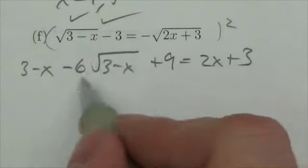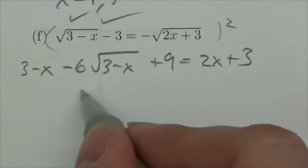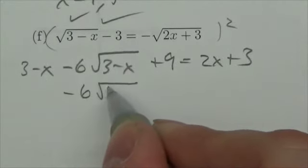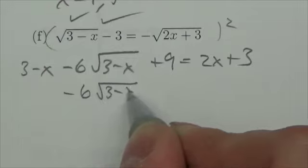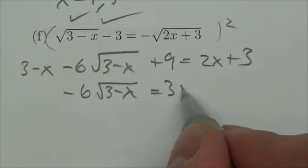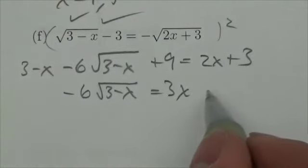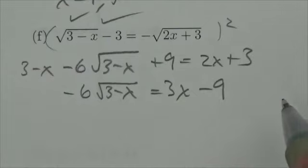So now my goal is to get this radical all by its lonesome here. I'm going to bring that x over. So I'll leave the negative 6 root 3 minus x on the left-hand side. I'll bring that x over to get 3x. What have I got here? 3 and 9 is 12. Bring that over will be negative 9 on the right-hand side.